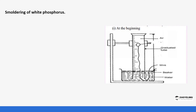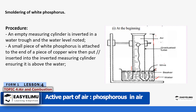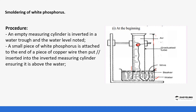For the experiment, a measuring cylinder is inverted in a trough containing water, and the initial water level is noted — as shown by the arrow. A small piece of phosphorus is placed on the end of a copper wire, which is then inserted into the inverted measuring cylinder.